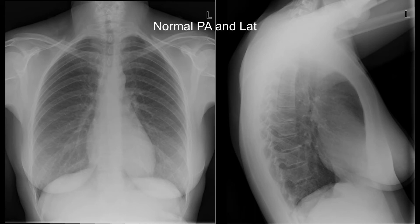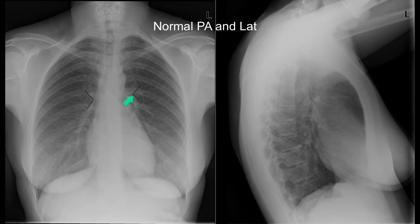Just to recap the normal anatomy: here is the aortic knuckle, here is the pulmonary trunk, here is the left pulmonary artery, and here is the right pulmonary artery. Notice that the left pulmonary artery is always higher than the right pulmonary artery, because it has to negotiate a more horizontally orientated left main bronchus.